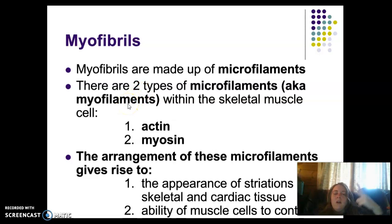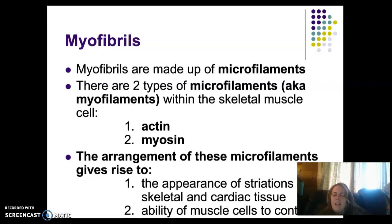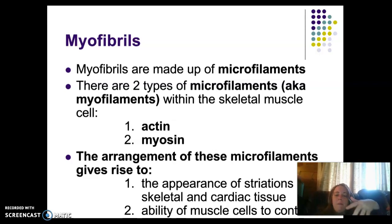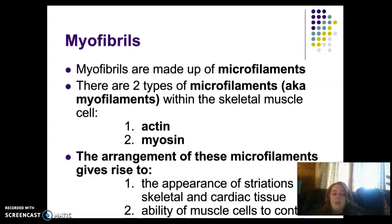We have two main types of myofilaments: actin and myosin. Actin is the thin filament, and mighty myosin is the thick filament. Myosin actually reaches out, grabs onto actin, and causes it to move - and that's what causes contraction, shortening, or movement to happen in your muscles. It's the arrangement of actin and myosin that also provides the striated or striped appearance of skeletal muscles.